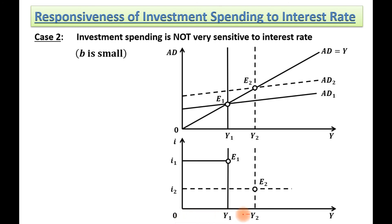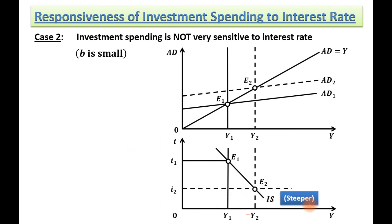The new equilibrium level of output is OY2 at interest rate OI2. Joining these two points, the IS curve in this case is steeper. A huge decrease in interest rate leads to only a small increase in income level.